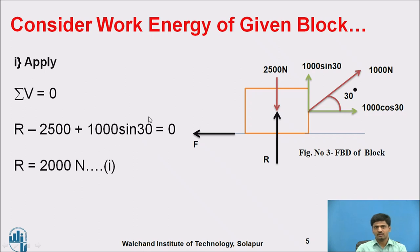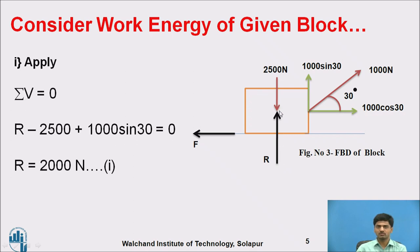First step: consider the work-energy principle of the given block and apply it to identify the unknown values. Summation of vertical forces equals zero — equating all vertical forces: R (vertical upward, positive) minus 2500 Newton plus 1000 sin 30 equals zero. R is unknown; calculate the value of R = 2000 Newton. By considering this figure and this equation, we identify the value of R.